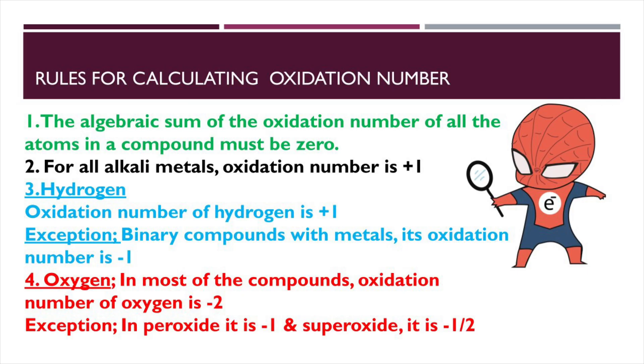To find oxidation number certain rules are there we need to follow. According to the rules the algebraic sum of oxidation number of all the atoms in a neutral molecule should be 0. For alkali metals oxidation number is plus 1.